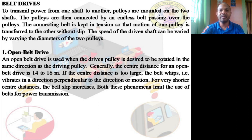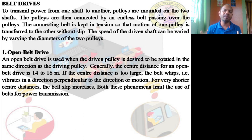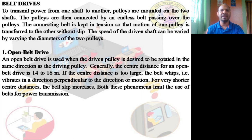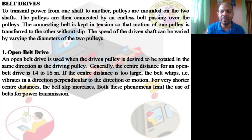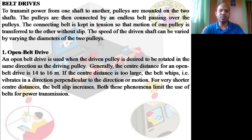To transport power from one shaft to another, pulleys are mounted on the two shafts and connected by an endless belt passing over them. The belt is kept in tension so that motion from one pulley is transferred to the other without slipping. Slipping occurs when the belt is not perfectly fitted between the two shafts. There are two main types of belt drives — open and cross belt drives — which will be discussed in the next class.